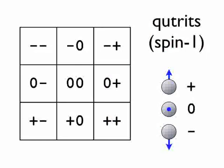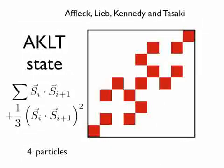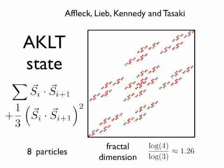The mapping can be generalized to states of higher dimensionality, for example, 3. Here we present the ground state of the AKLT Hamiltonian with its fractal structure. Its fractal dimension is actually 1.26.